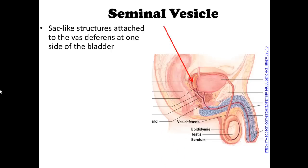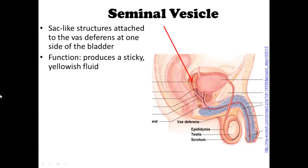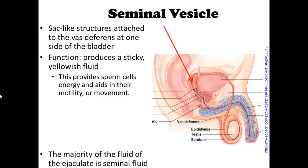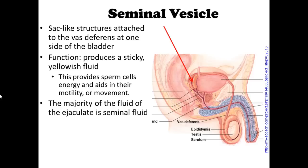Now we're going to talk about the seminal vesicle. It is a sac-like structure attached to the vas deferens, located on one side of the bladder. Its function is to produce a sticky yellowish fluid that provides sperm cells with energy and aids their motility, or movement. The majority of the fluid in the ejaculate is seminal fluid.